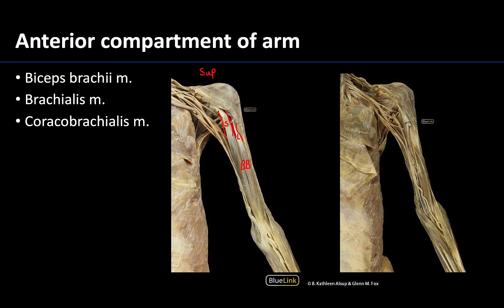You can really see the short head of the biceps brachii attaching to the coracoid process right underneath there. The long head is deeper — it looks like it is hidden underneath the deltoid muscle — and it actually has a portion of its tendon that travels within the joint cavity of the glenohumeral, or shoulder, joint.